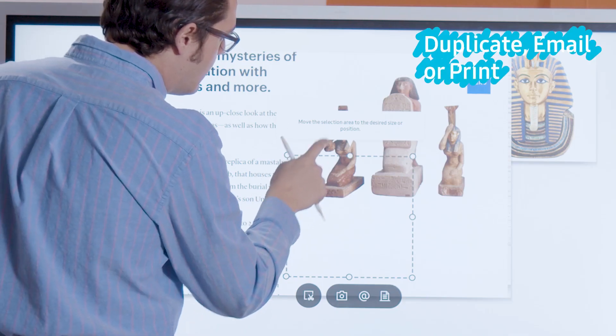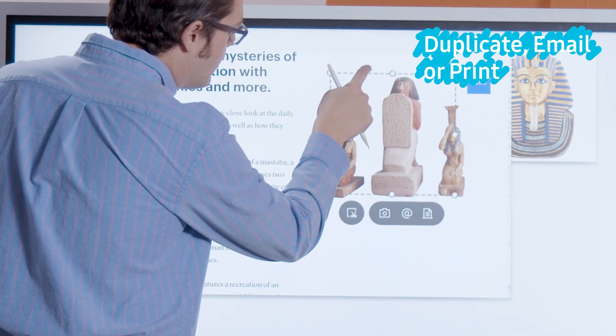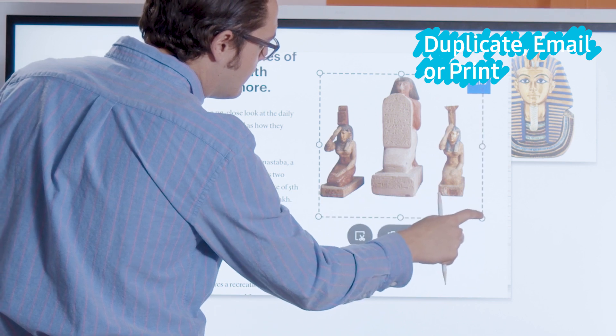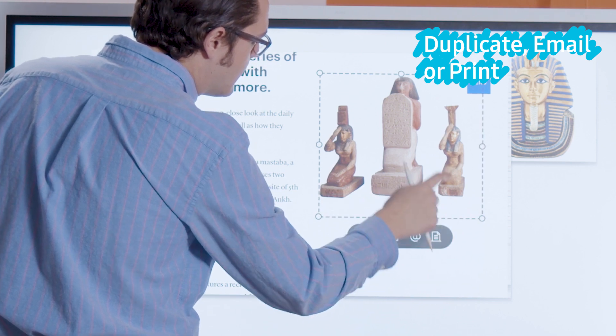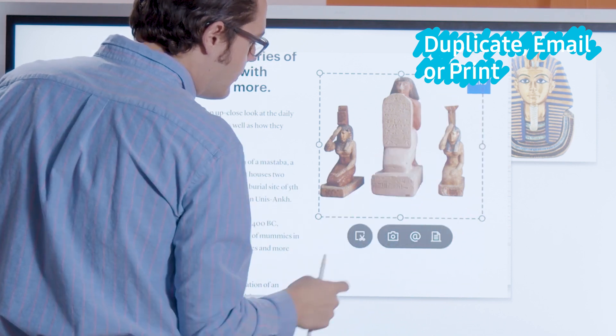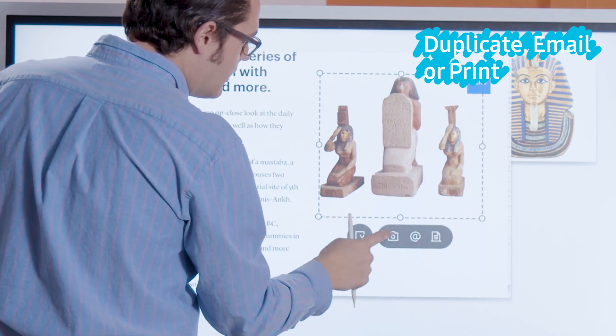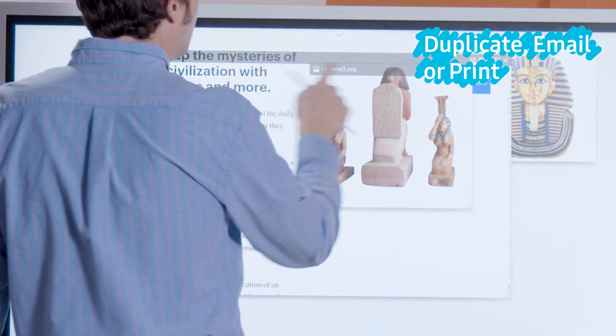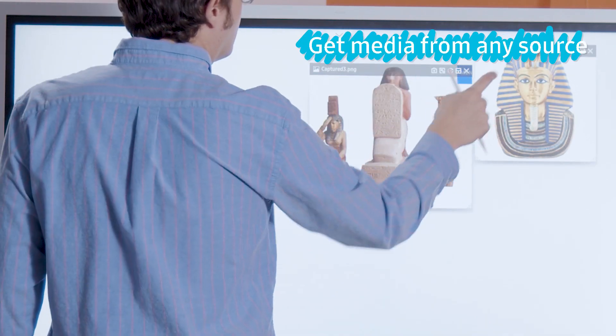Drag the box to your desired location and resize. Here you can see that your selection can be duplicated, emailed, or printed. Tap the camera icon and your selection will appear as a new image.